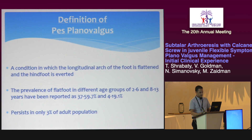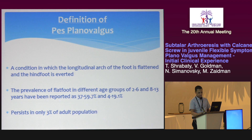Pes planovalgus is a condition in which the longitudinal arch is flattened, the hind foot is averted, and the forefoot is pronated. The prevalence is different in two age groups. In the first group, between two to six years, the prevalence is about 60%, then it decreases to 20% in the age group eight to thirteen, and persists in only three percent of the adult population.